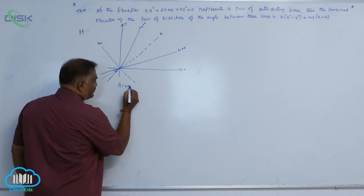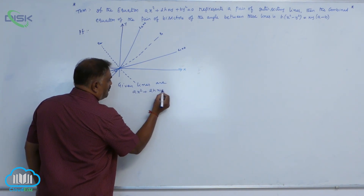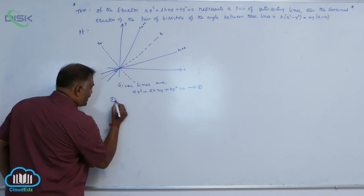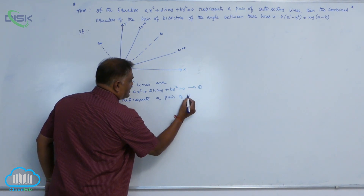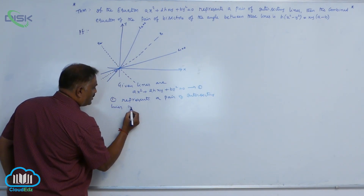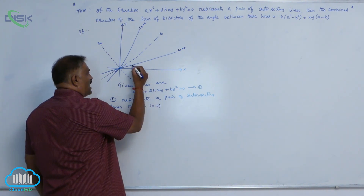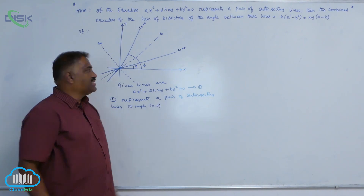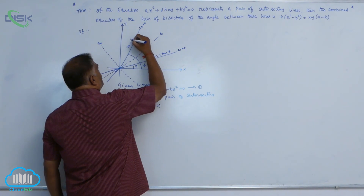The given lines are ax² + 2hxy + by² = 0, call it equation 1. Equation 1 represents a pair of intersecting lines through the origin. Let us consider the inclinations: this angle is theta and this angle is phi. When theta and phi are the inclinations, the slopes are given by m = tan θ and m = tan φ respectively.